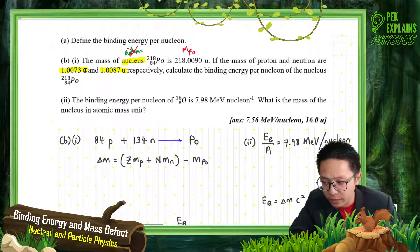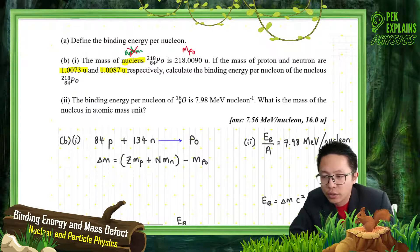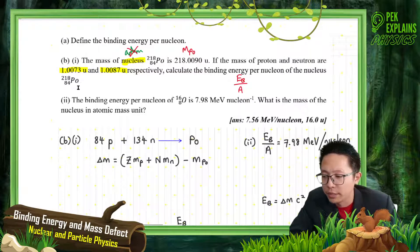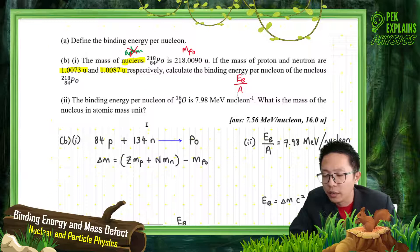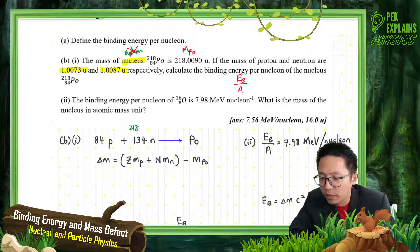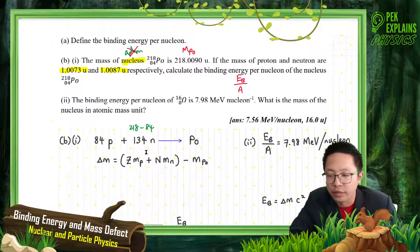Now calculate the binding energy per nucleon. Nucleon refers to the mass number. For Polonium, there are 84 protons. The number of neutrons is 218 minus 84, which gives 134 neutrons.